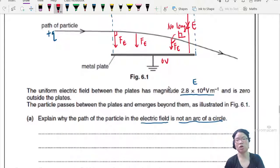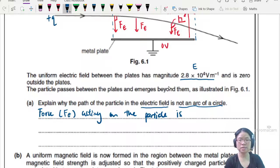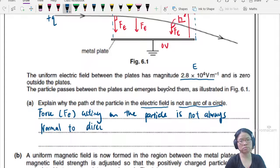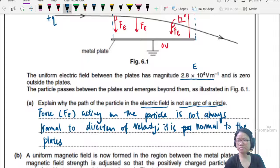Although it is 90 degrees at the beginning, this angle here is obviously no longer normal. That is the reason why it is not an arc of a circle. The electric force acting on the particle is not always perpendicular or normal to the direction of velocity. Instead it is parallel or normal to the plates. Hence path is not circular.